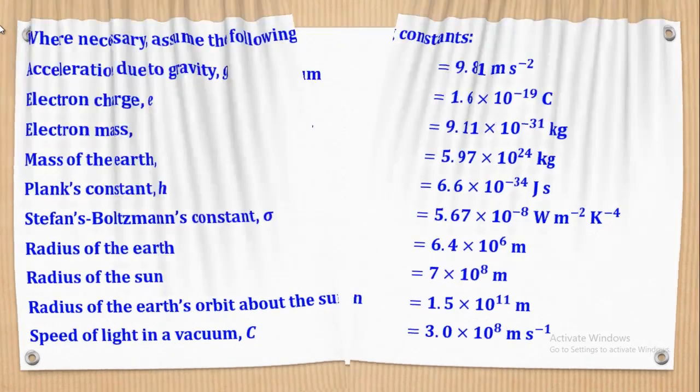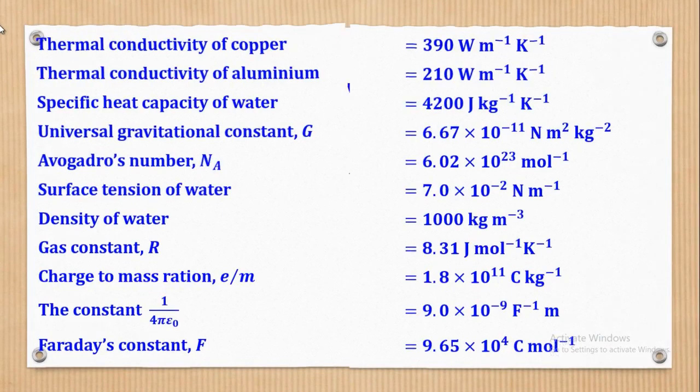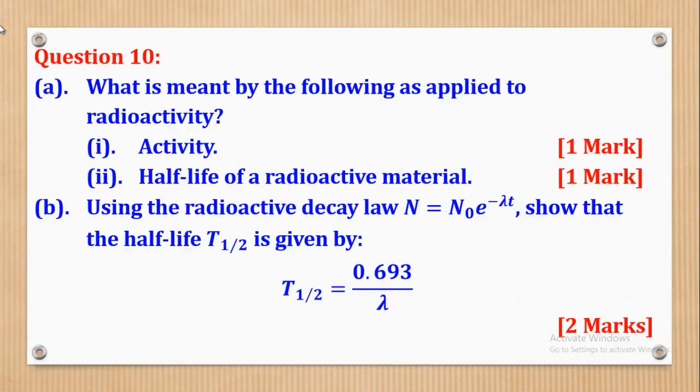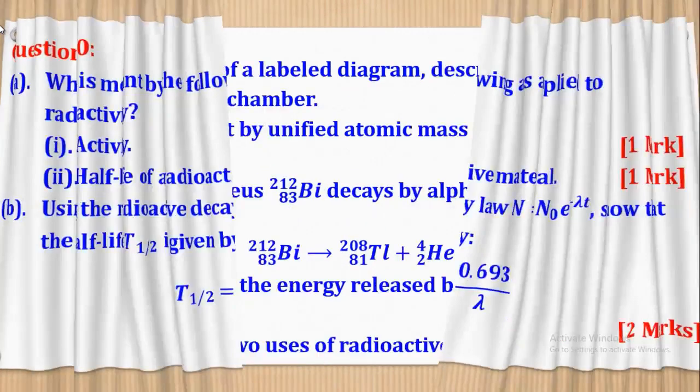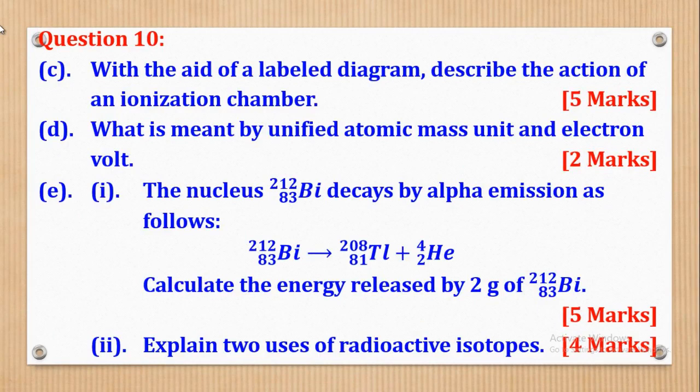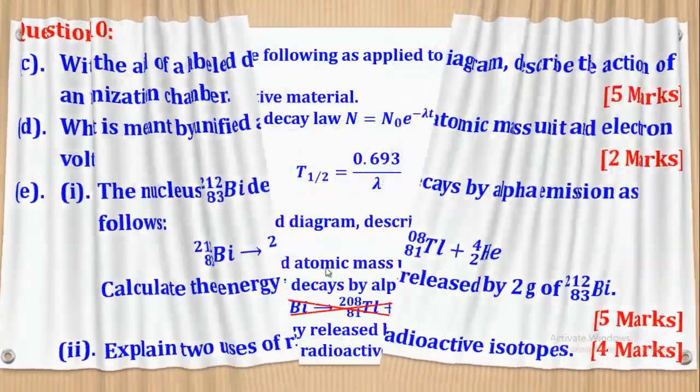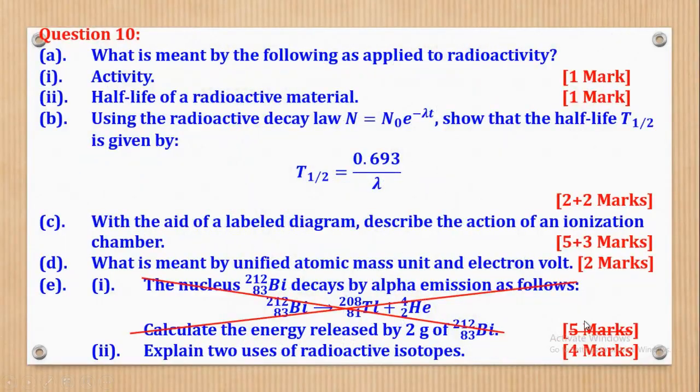Where necessary, the following constants can be used. Now these are the questions I left in the previous video and I believe by now you are ready to try them out and ready to mark yourself and check your progress. But before we begin, you must have realized that question Part E Roman 1 could not be done because the unified masses for these elements were not given. So we cancelled it out and the marks were redistributed. These 5 marks were redistributed whereby 2 marks were added on Part B to make 4 and 3 marks were added on Part C to make 8. So that's how the marks will be awarded as we go through this solution.